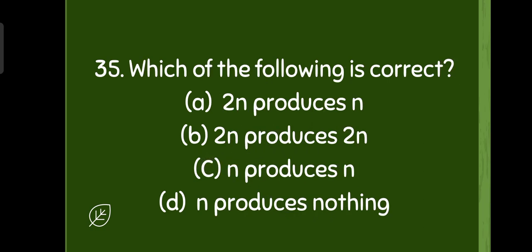Which of the following is correct: 2N produces N, 2N produces 2N, N produces N, or N produces nothing. So option A and B both are correct.